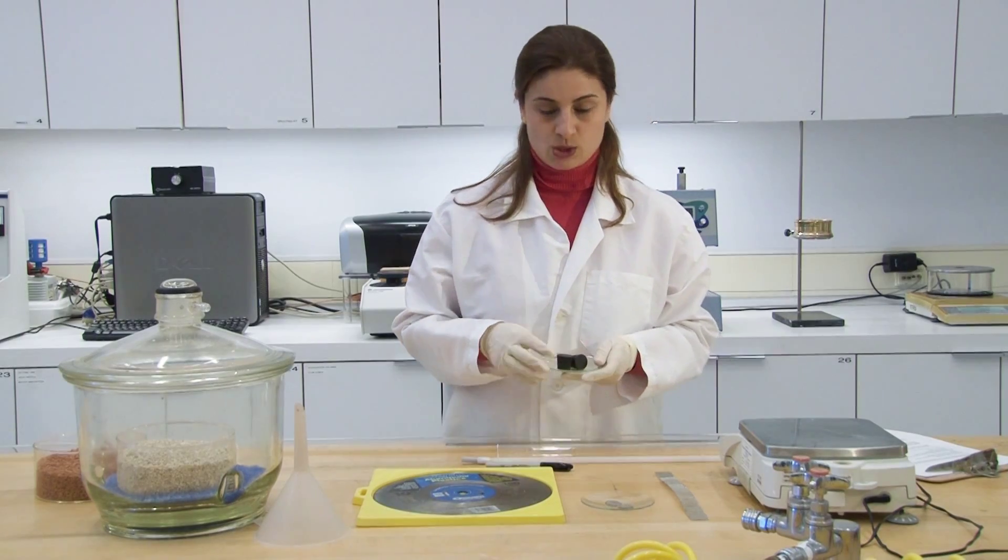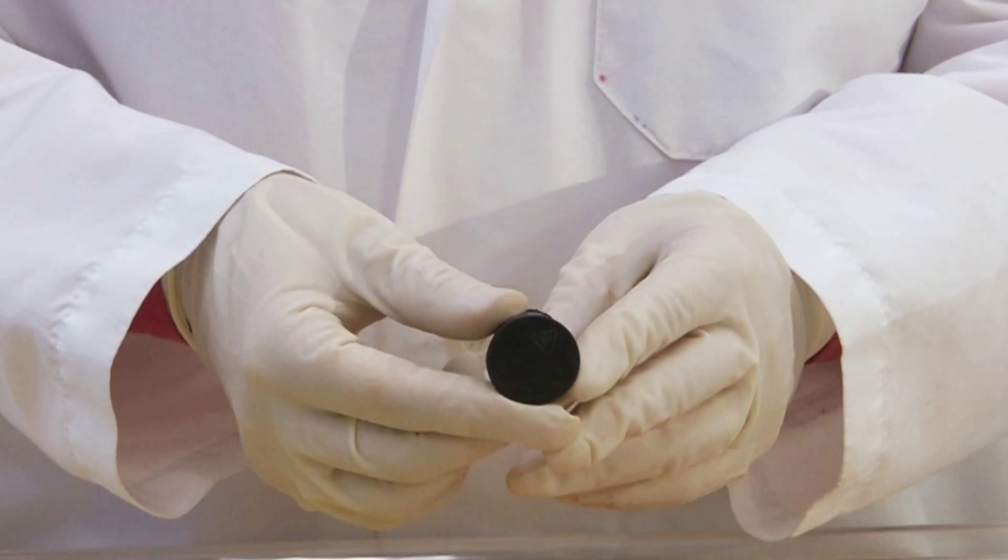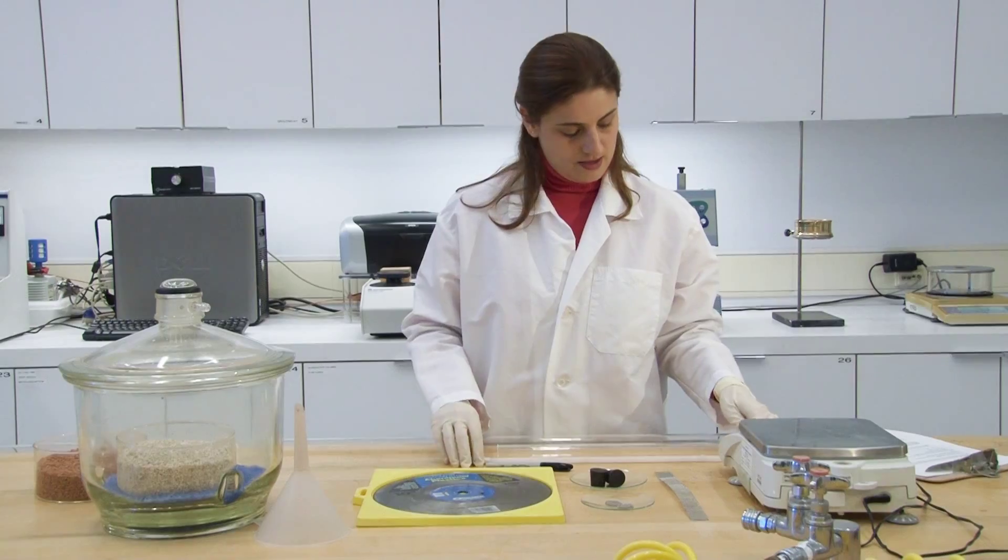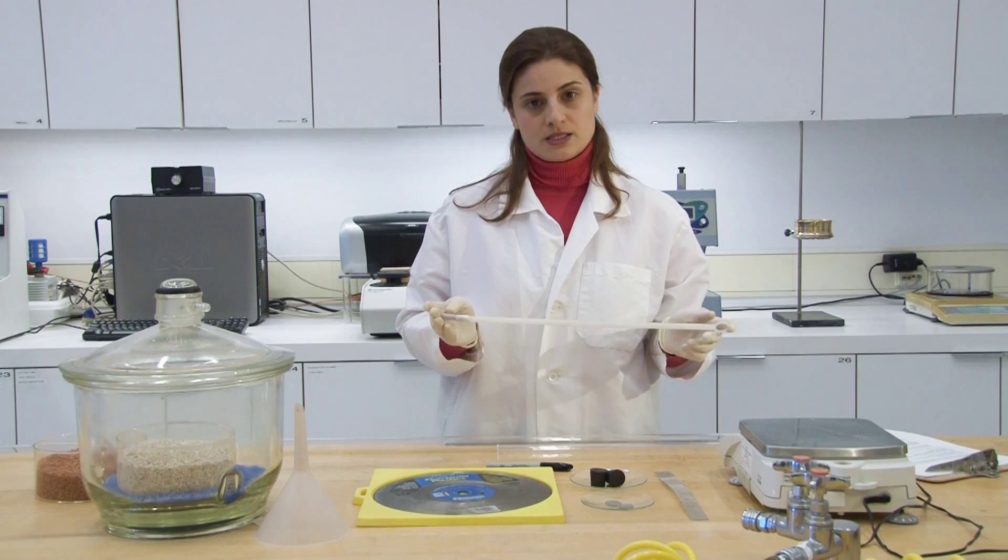Next, we will need stoppers. These are solid rubber stoppers size 4 and we need two per column. We also need a rod in order to help us to position the wire mesh discs.